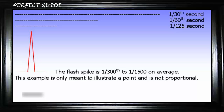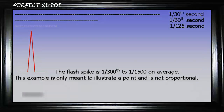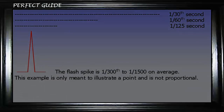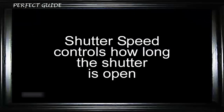The flash fires as soon as the shutter opens, but the shutter remains open for whatever its set duration is to capture ambient light. The flash or strobe exposure is going to be constant. This proves the shutter speed cannot control the brightness of the flash, because it controls only the amount of time that ambient light is recorded.